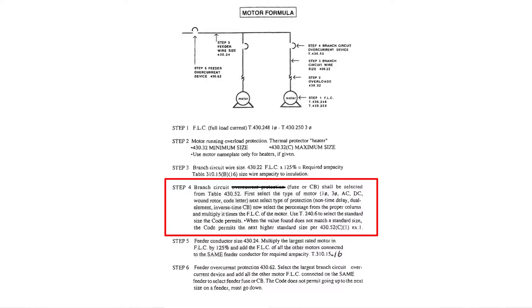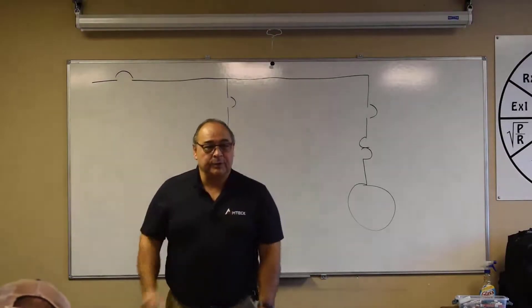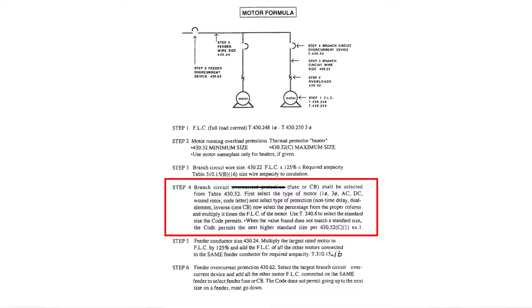So we're talking about a fuse or circuit breaker, yes we are, but we're not using it in the fashion that we normally would. We're using it as ground fault or short circuit protector. It says shall be selected from table 430.52. It says first select the type of motor: single phase, three phase, AC, DC, wound rotor, code letter, all that.